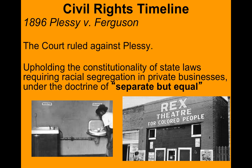What transpired next would really set the precedent in the United States for the next 60 years: the ruling of separate but equal. The ruling of Plessy v. Ferguson stated that if blacks were offered the same access to certain businesses, schools, and facilities, they could be separated by law, and this was considered to be equal. This carries on for the next 60 years.